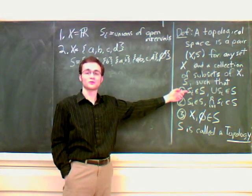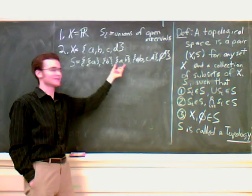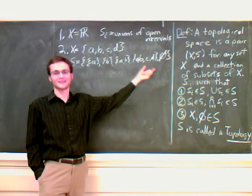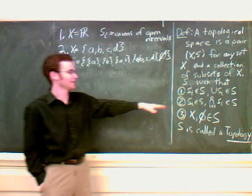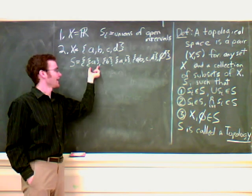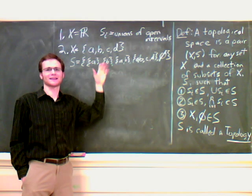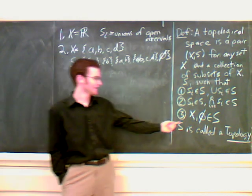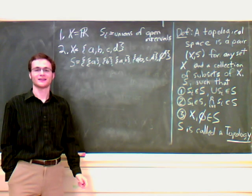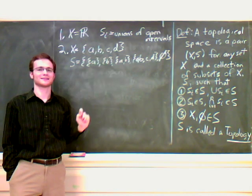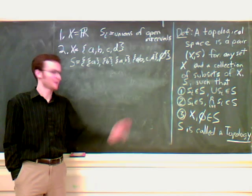First we have to check unions are in S. Unions of open sets are open. A union B is AB. B union AB is AB. AB union ABCD is ABCD, etc. You can see that all the combinations possible will work. Second, finite intersections. A intersect B is the empty set. AB intersect B is B, etc. You can see that that property will also work. And X and the empty set are in our topology. So S is in fact a topology.